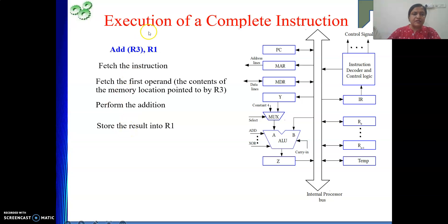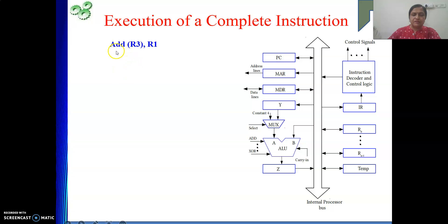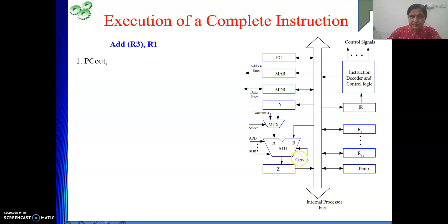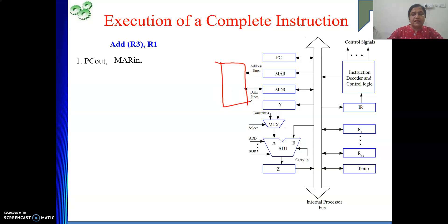Let's start with fetching the instruction. Who is pointing to the instruction? The address is in PC. Who can point to memory? MAR. So PC's content needs to go to MAR. First: PC out — PC's content will be on the bus. Then MAR in — that connects to the address bus and to the memory chip. Address is given. After giving the address, we give the read signal. So: PC out, MAR in, then read signal.